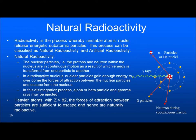In the previous slides, we looked at the sources of radiation, particularly background radiation — natural and man-made. We will now look at radioactivity. Radioactivity is a process whereby unstable atomic nuclei release energetic subatomic particles. These processes can be classified as two: natural radioactivity and artificial radioactivity. In natural radioactivity, nuclear particles like protons and neutrons within the nucleus are in continuous motion, transferring energy from one particle to another. In a radioactive nucleus, the particles gain enough energy to overcome the force of attraction and escape from the nucleus — that results in radioactivity.